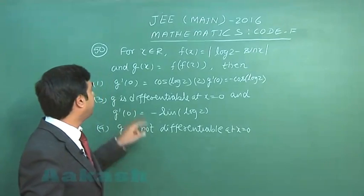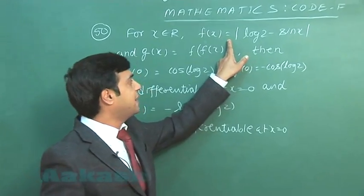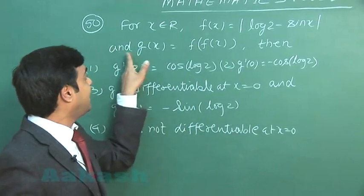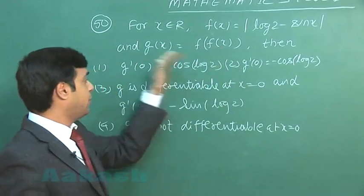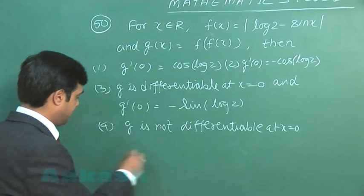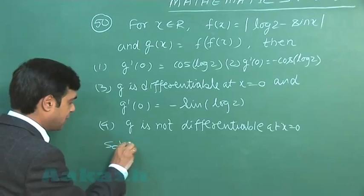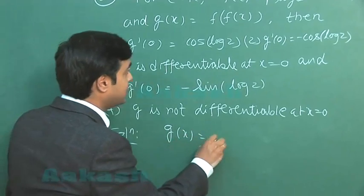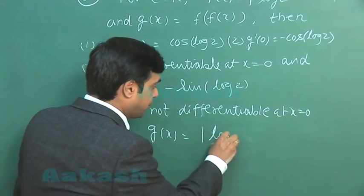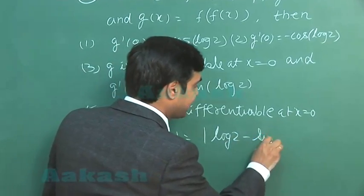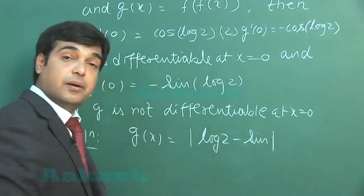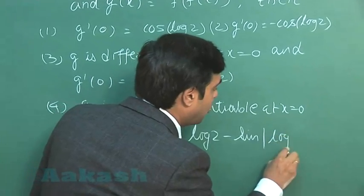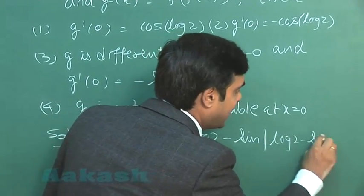Question 50: for x from the set of real numbers, f(x) is modulus of log(2 minus sin x), and g(x) equals f(f(x)). Which of the following is correct? Let us find g(x): it is the modulus of log(2 minus sin(|log(2 minus sin x)|)).